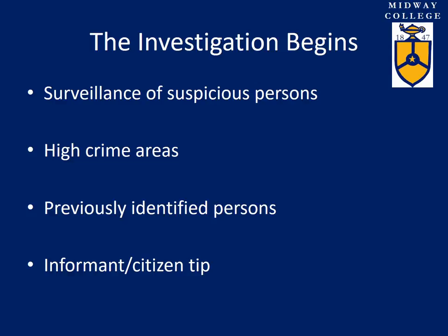Surveillance of suspicious persons may come from a concerned citizen, a criminal informant, or just somebody in the community that has the attention of law enforcement. People in high crime areas — for example, drug dealers hanging out on certain street corners where cars come by and they approach to make a drug sale. Prostitution is another example, where a person drives up and tries to make a transaction. Sometimes it involves previously identified persons who have been arrested for these crimes before. And again, we start our investigation from that point.